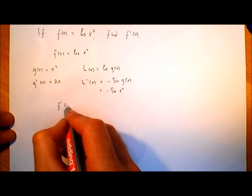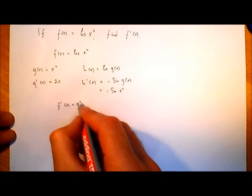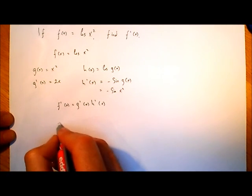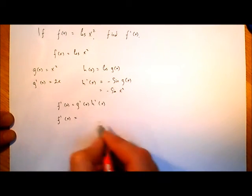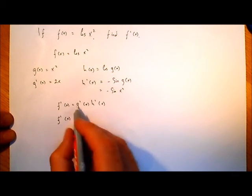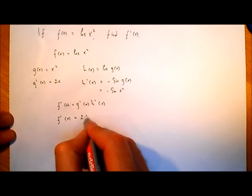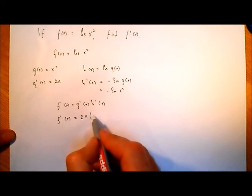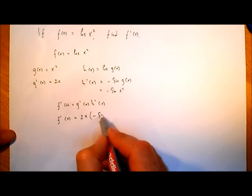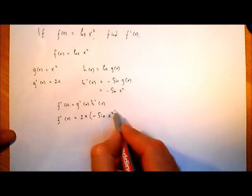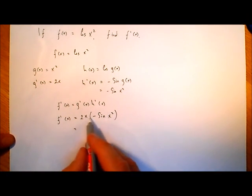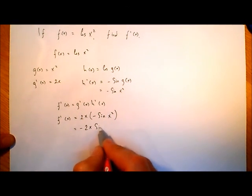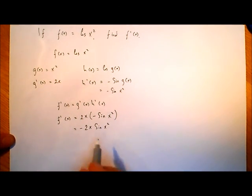So then f'(x) is equal to, again, g'(x) by the chain rule, times h'(x). So f'(x), f(x) differentiated, is equal to 2x multiplied by—so be careful here of this -sin—multiplied by -sin(x²). I can simplify that, I can multiply out the brackets here, I get -2x sin(x²).